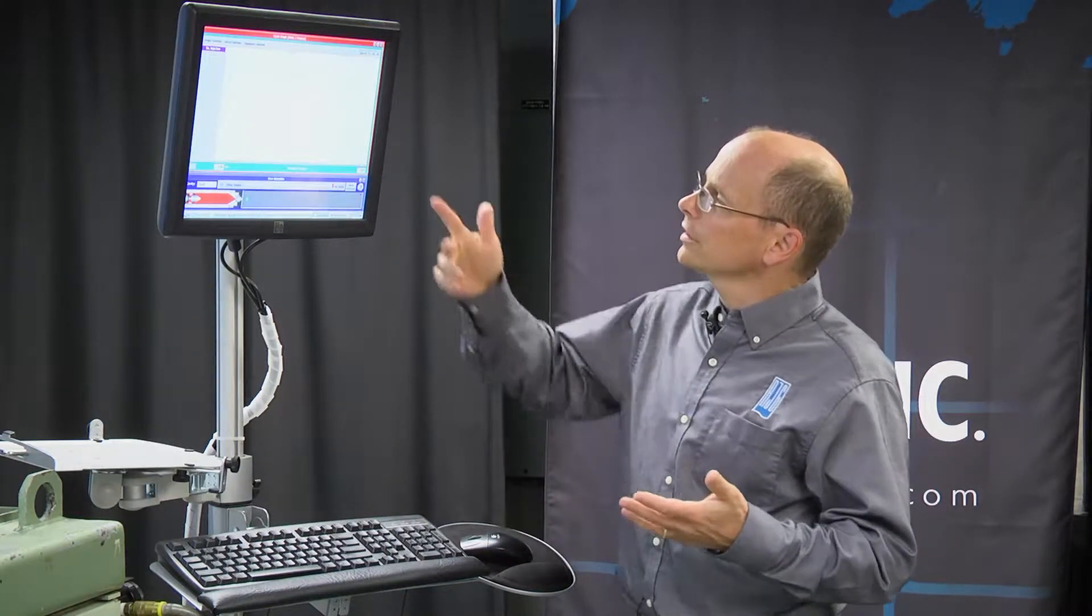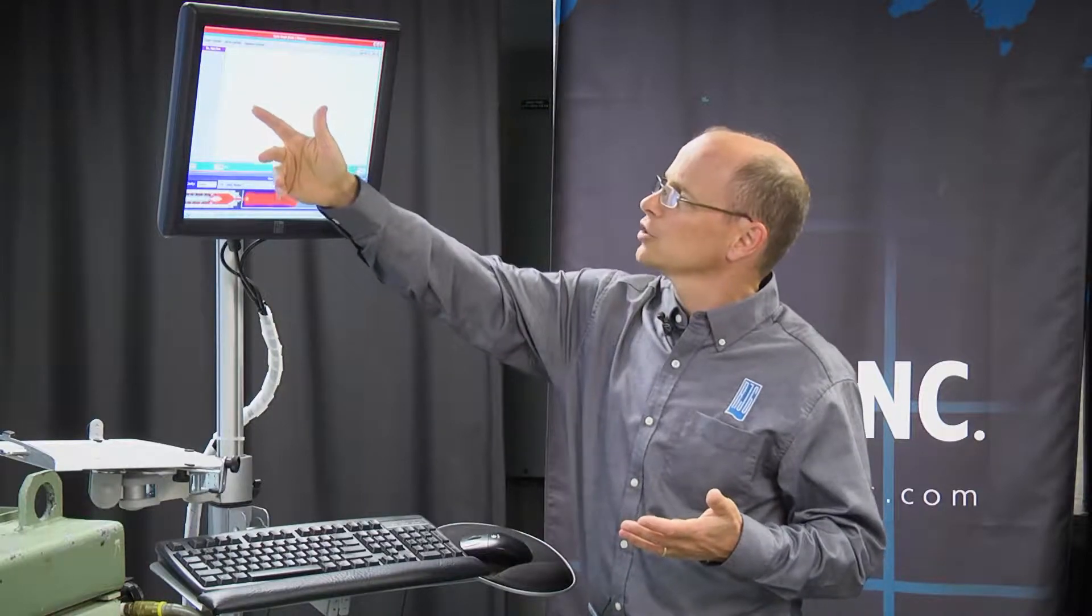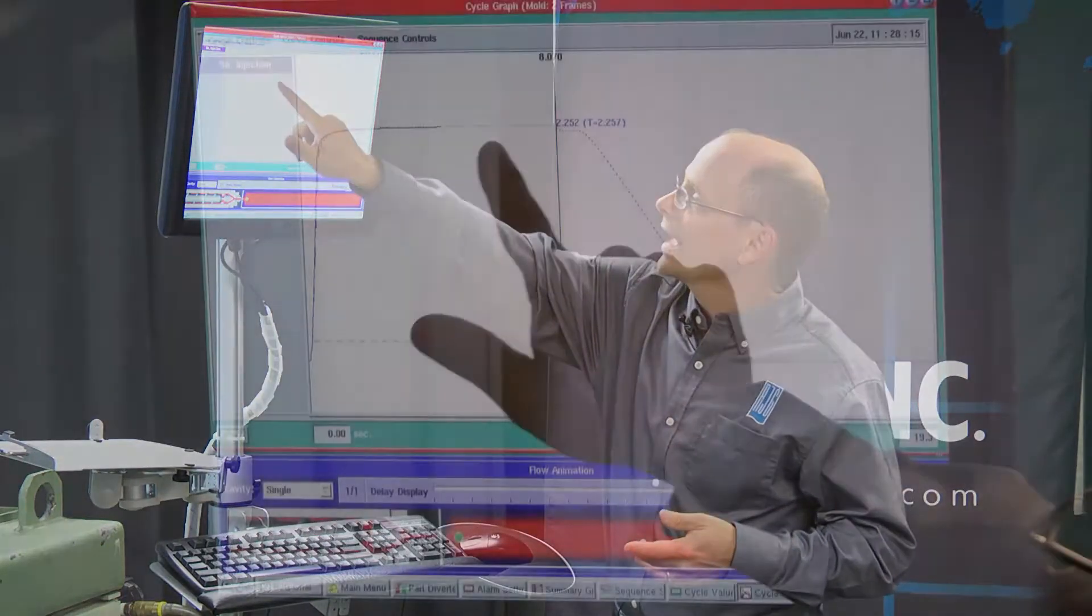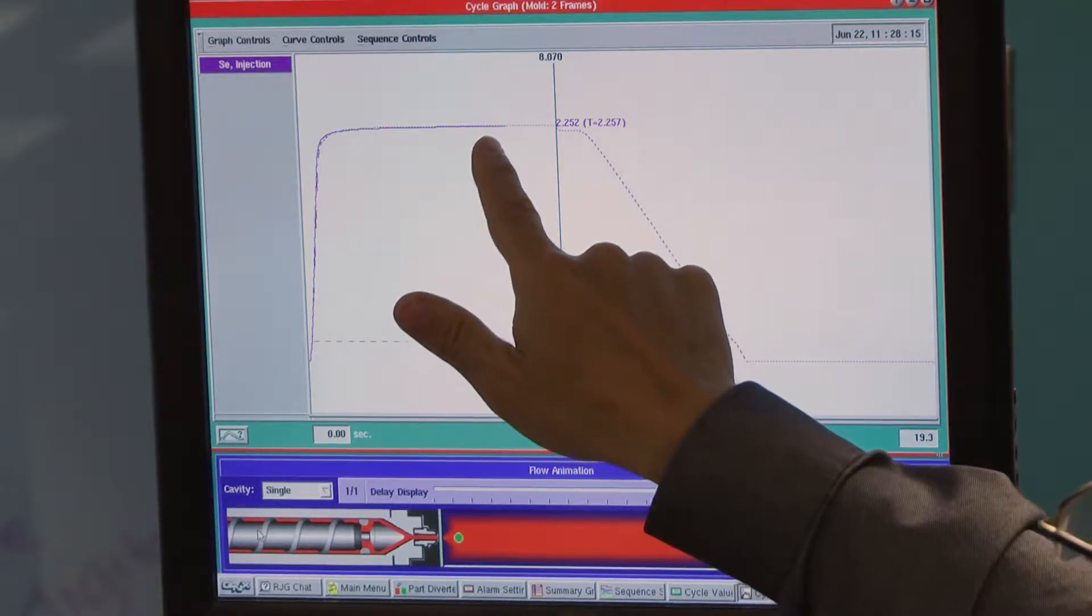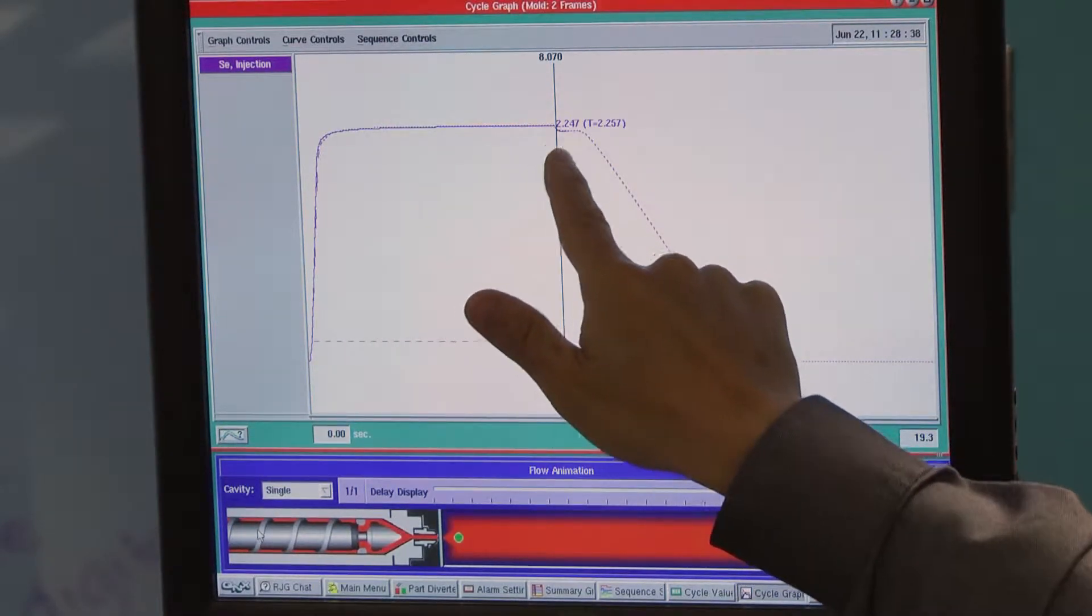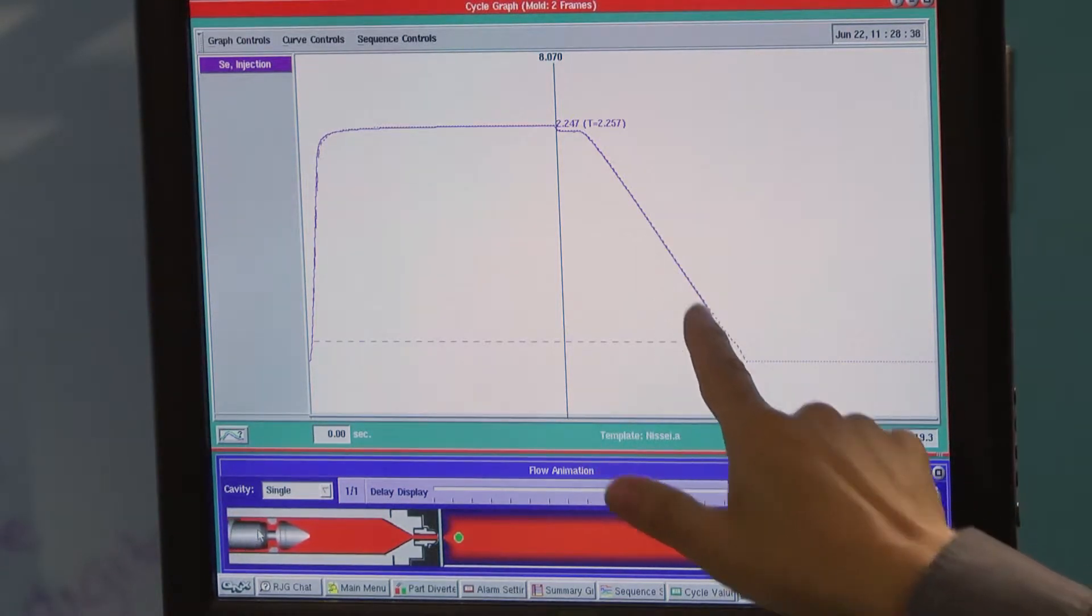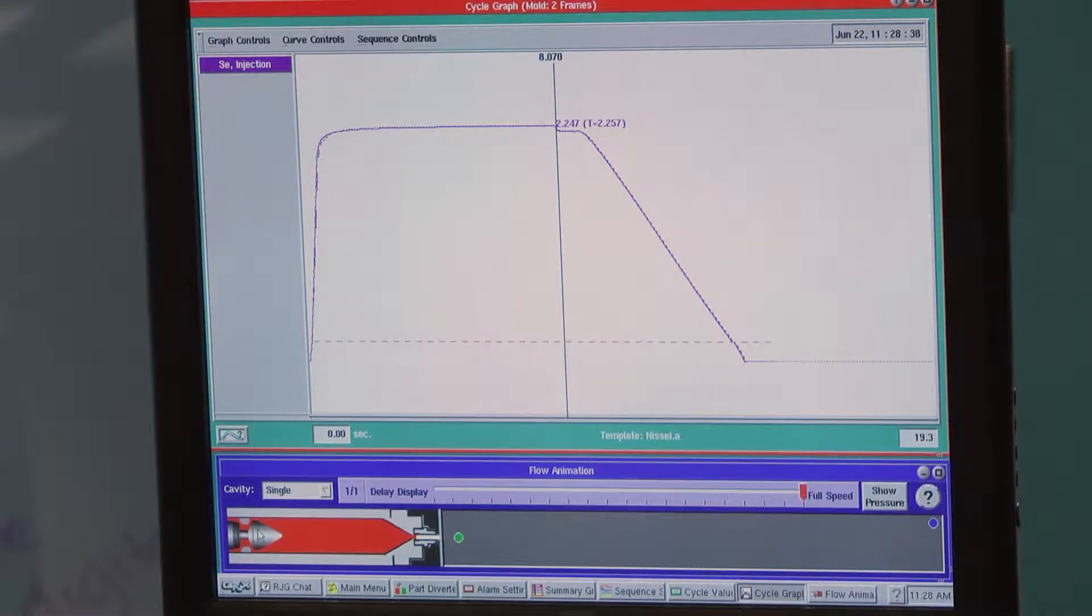At this point we've covered the stroke curve and shown how we've added a template so we can see the current stroke data, which is a solid line, compared against the dashed line which is the template. The next step is to add the injection pressure curve.